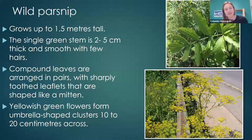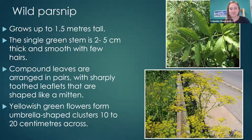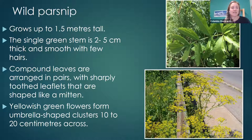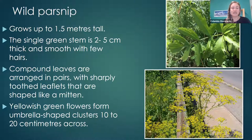The next plant is wild parsnip. Like giant hogweed and other members of the carrot family, it produces a sap that can cause sensitivity to sunlight, resulting in burns, blisters, and rashes, so you want to be completely covered when working around this plant. It can grow up to 1.5 meters tall and has a smooth stem with a few hairs. The distinctive feature is its bright yellow inflorescence, unlike the white flowers of most other species. Its leaves have a mitten shape and are sharply toothed.